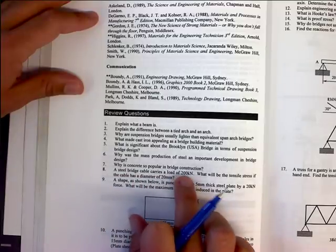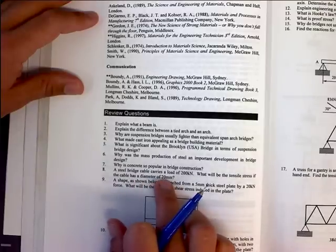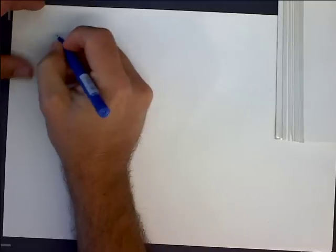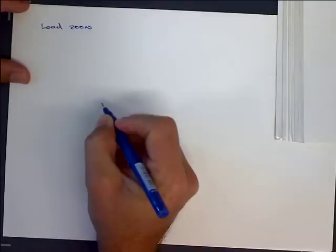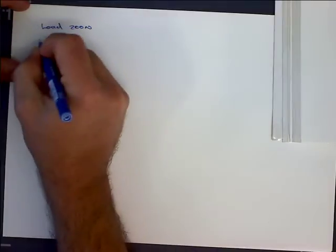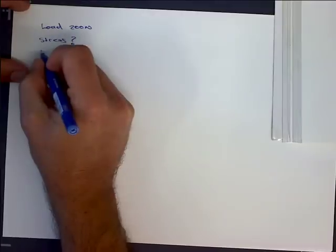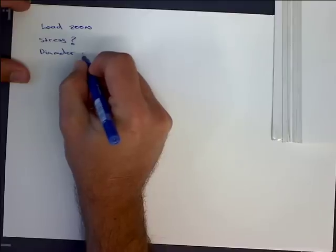A steel bridge carries a load of 200 kilonewtons. What will be the tensile stress if the cable has a diameter of 200 millimeters? So the way that we've got to do this is we first of all got to go through what we know and what we don't know. Now the question states that the cable carries a load of 200 newtons and that the tensile stress is unknown, but they do tell us that the diameter is 20 millimeters.